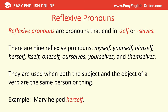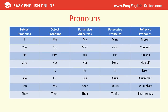Reflexive pronouns are pronouns that end in -self or -selves. There are nine reflexive pronouns: myself, yourself, himself, herself, itself, oneself, ourselves, yourselves, and themselves. They are used when both the subject and the object of a verb are the same person or thing — for example, 'Mary helped herself.' Here is a table showing the different types of pronouns — subject pronouns, object pronouns, possessive adjectives, possessive pronouns, and reflexive pronouns — please take a look at this in your own time.